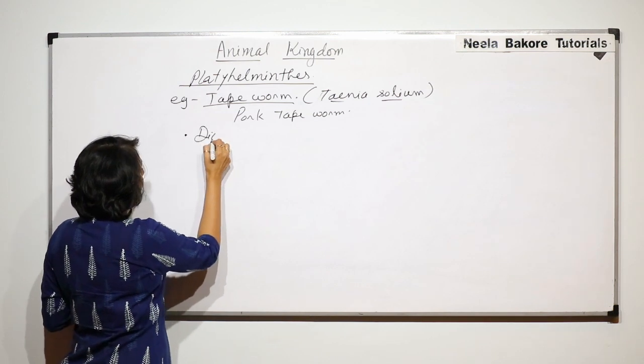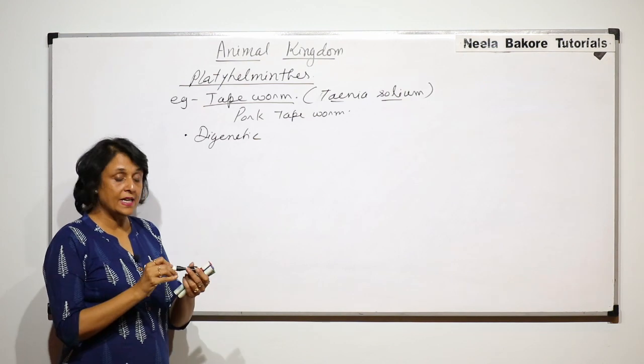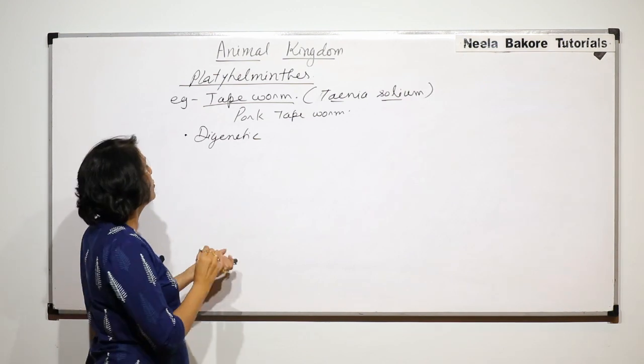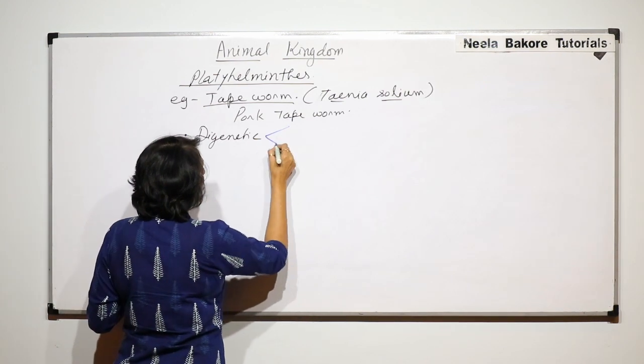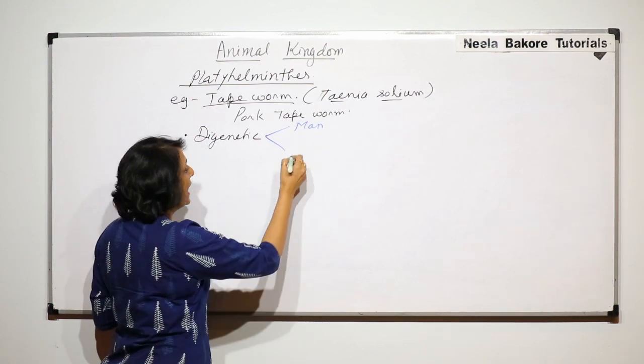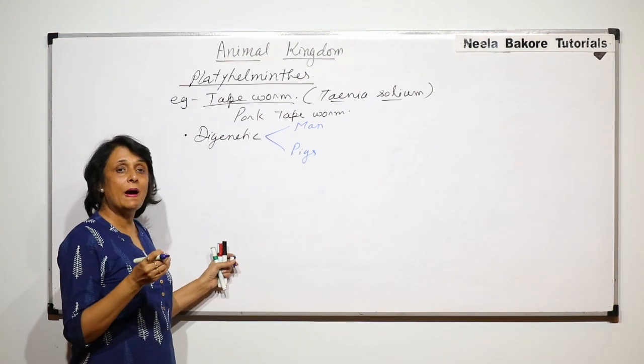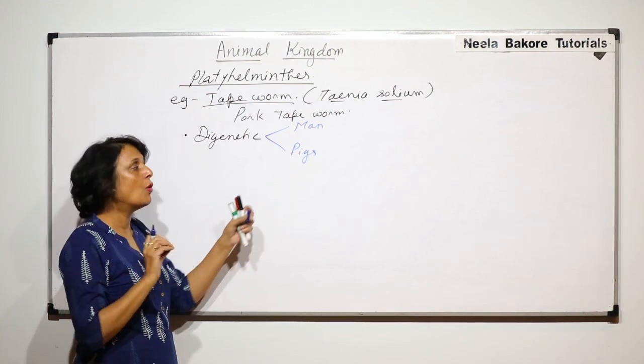This worm is digenetic. Digenetic means it completes its life cycle in two hosts and these two hosts are man, that is in humans, and in pigs. So in humans they complete the major part and in the pig also a small part.